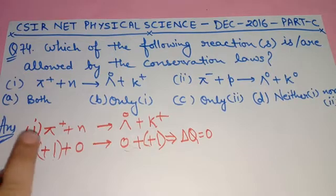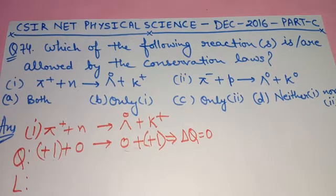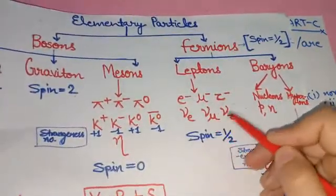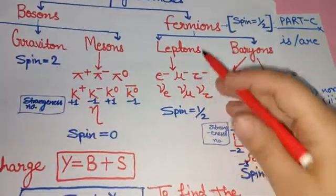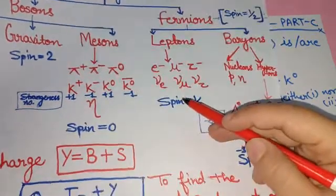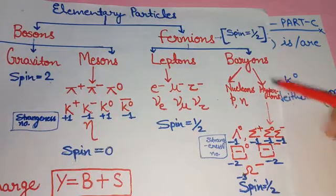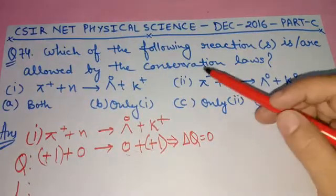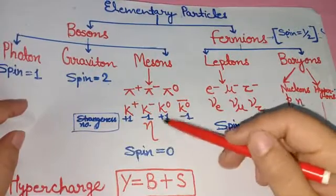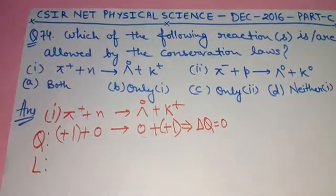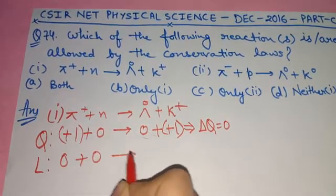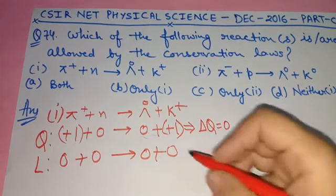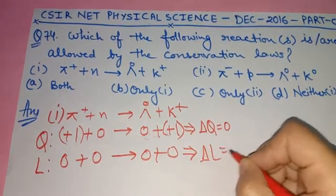Now let's check the lepton number. Pi positive is a meson, not a lepton — lepton number 0. Neutron is a baryon, not a lepton — lepton number 0. Lambda naught is a baryon, not a lepton — lepton number 0. K positive is a meson, not a lepton — lepton number 0. Since there are no leptons among these particles, delta L equals 0, so lepton number is conserved.